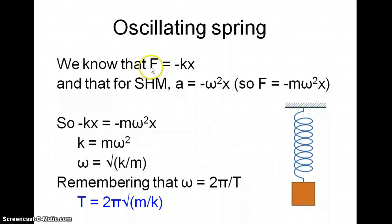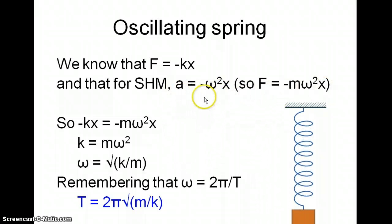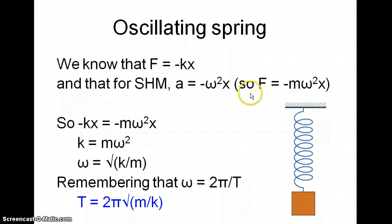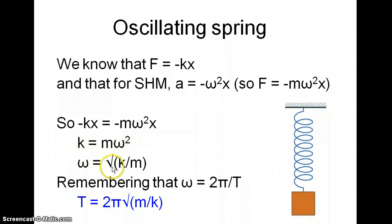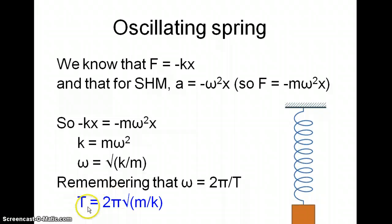For an oscillating spring, we know that the force equals minus kx — that's Hooke's law — and we know the acceleration is minus omega squared x. Using F equals ma, we get minus kx equals minus m omega squared x, which rearranges to k equals m omega squared. Dividing both sides by m and taking the square root gives omega equals the square root of k over m. Since omega equals 2 pi over T, substituting gives the formula T equals 2 pi times the square root of m over k.